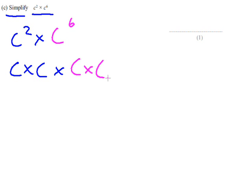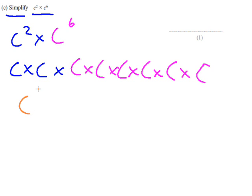But if you want to write it out: c squared is c times c, multiplied by c to the power of 6, which is c times c 6 times. So you can see there's c times c 8 times, and the answer is c to the power of 8.